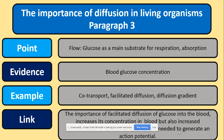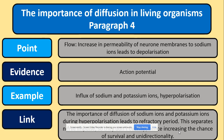For the next paragraph, since we're talking about respiration, you could say glucose is the main substrate for respiration and link it to the absorption of glucose. The evidence is blood glucose concentration — again, a concentration gradient. The example covers glucose absorption and diffusion: co-transport, facilitated diffusion, and diffusion. The link: the importance of facilitated diffusion of glucose into the blood increases its concentration in the blood, but also increases the concentration of sodium ions, which are needed to generate an action potential.